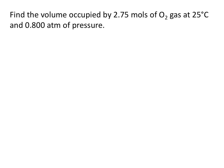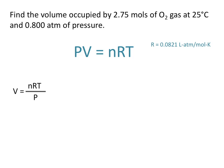Find the volume occupied by 2.75 moles of O2 gas at 25 degrees Celsius and 0.8 atmospheres of pressure. Remember that PV equals nRT, where R is the ideal gas constant at 0.0821 liters atmospheres per mole Kelvin. If we rearrange this equation to solve for volume, we get that the volume is equal to n, the number of moles, times R, times the temperature, all divided by pressure.